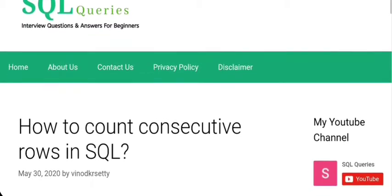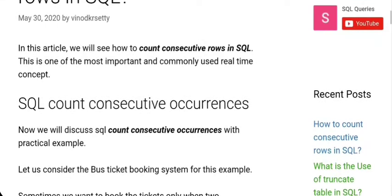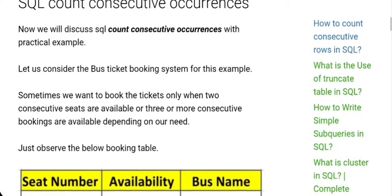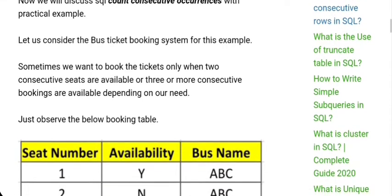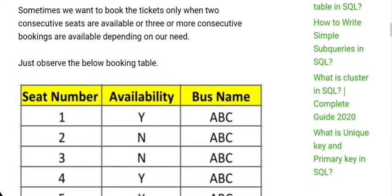Here we'll see how to count consecutive rows in SQL — also called consecutive occurrences. Sometimes you want to book tickets where three seats are available; in that scenario we use a consecutive count of seat booking.